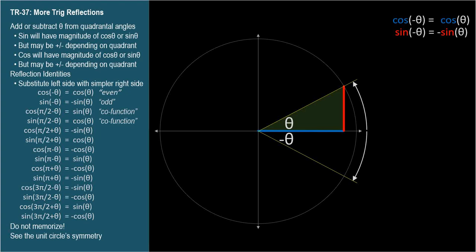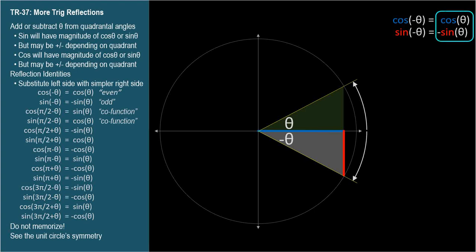Blue for cosine, red for sine. The hypotenuse is 1 since we're on a unit circle. Now let's make the triangle for negative theta in gray — same cosine, opposite sine. The rest of this video is going to be drawing gray triangles all the way around the circle.